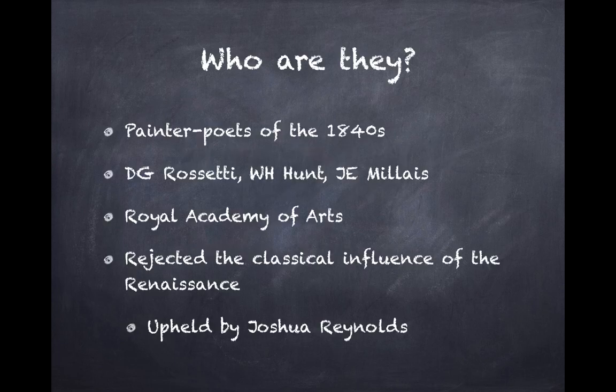Who are the Pre-Raphaelite Brotherhood? They are painter-poets of the 1840s. Mainly there were three painter-poets: Dante Gabriel Rossetti, William Holman Hunt, and John Everett Millais. They were students of the Royal Academy of Arts in London, and they rejected the classical influence of the Renaissance.